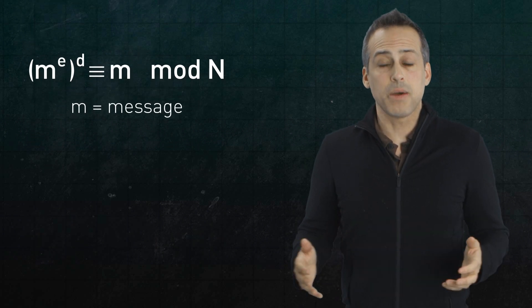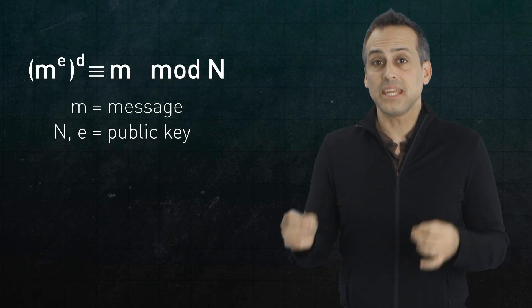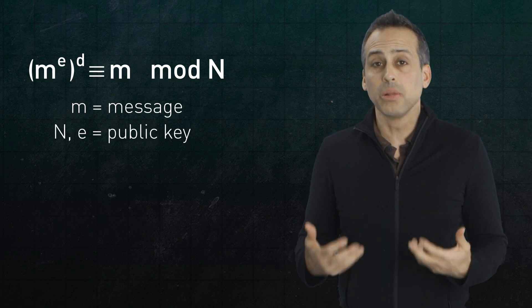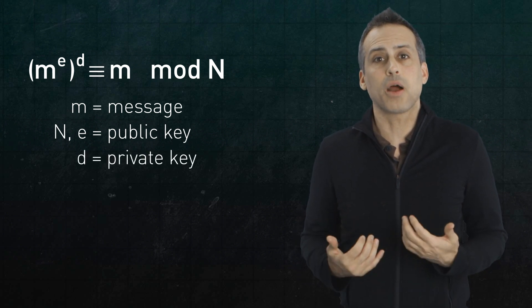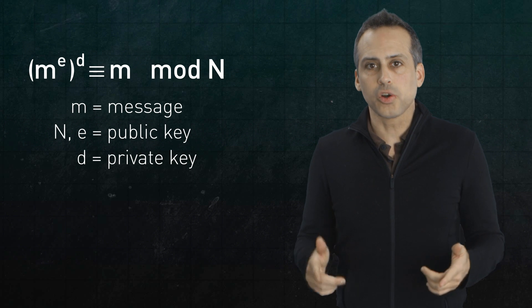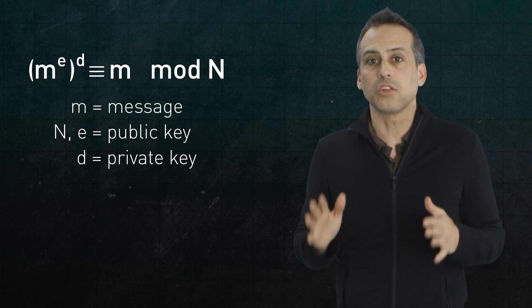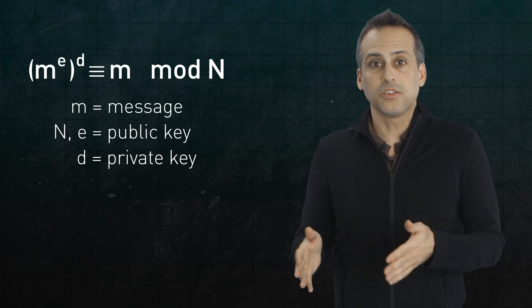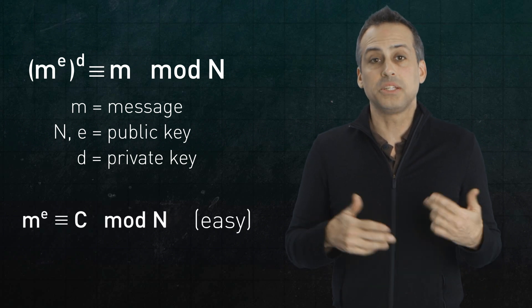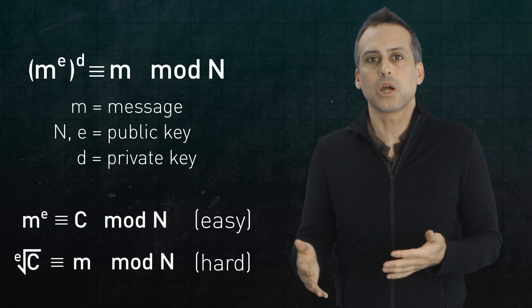In this picture, m is the message you want to send. n and e are published together as a public key, and d is kept private. Now technically, the modular exponentiation that we just performed is also a one-way function. Raising something to the e power mod n is easy, but taking an e root mod n is really hard.